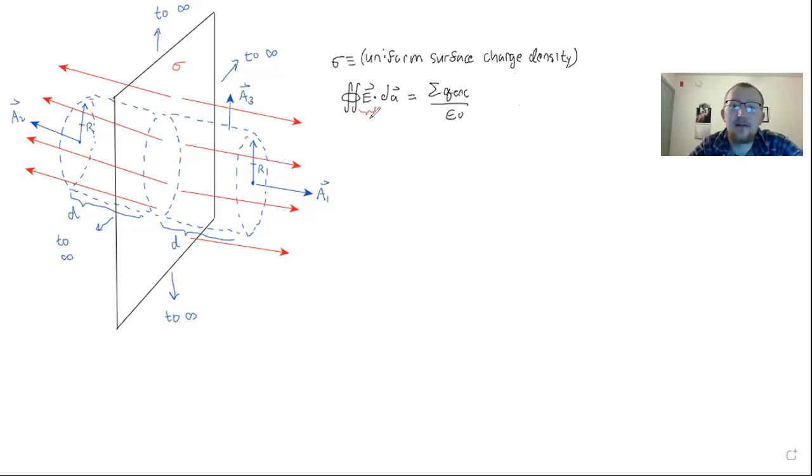So now we have to manipulate this in a way that's going to help us find the electric field strength at some distance d away from an infinitely large uniformly charged plane. Let's start with figuring out the flux on the left side here. And I probably should have labeled these red vectors as E field vectors.